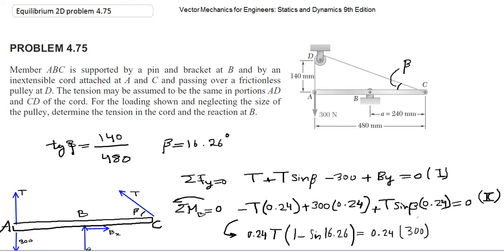In problem 475, we have a member ABC supported by a pin at B, and there is a chord between A and C. Because there is a chord, the force applied from the chord at A is upward and equal to the force applied at C toward point D. The magnitudes of the force at A and at C are both equal. We are going to find the reaction force at B and also the force at the chord.